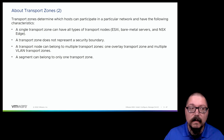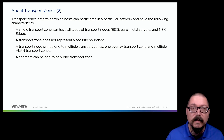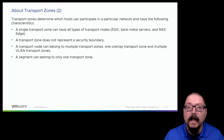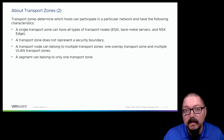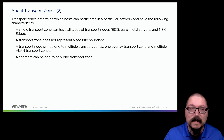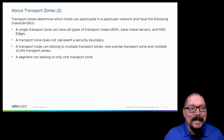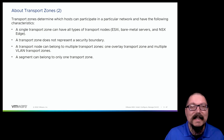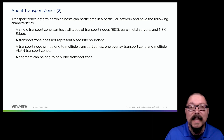I'll probably have one of each — one overlay transport zone and one VLAN transport zone — but I could have multiple of either type depending on what I need. For design-specific use cases, that's a design class conversation. A segment exists in the context of a transport zone, and a transport zone contains the hypervisors or transport nodes that need to be configured.